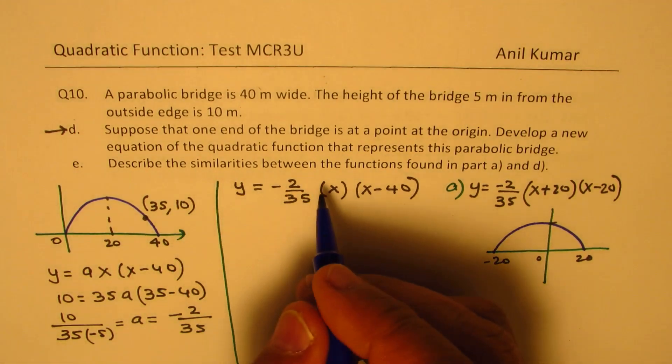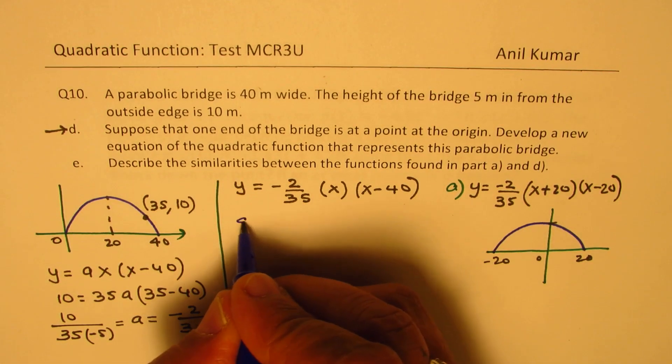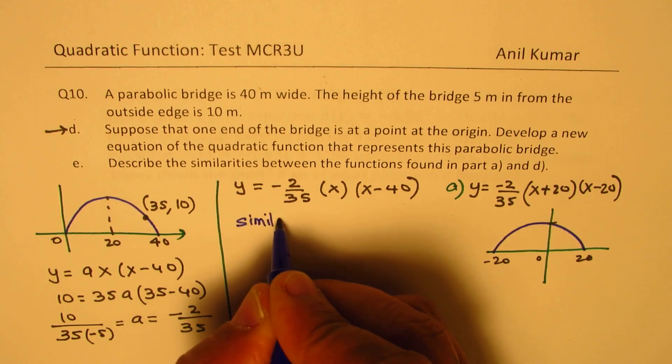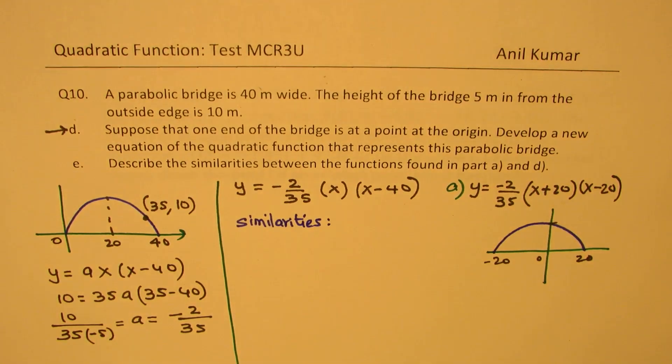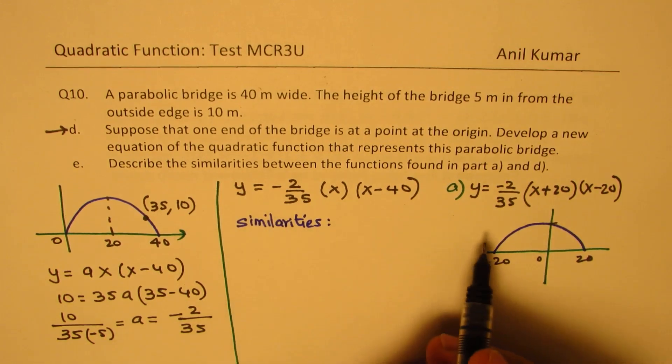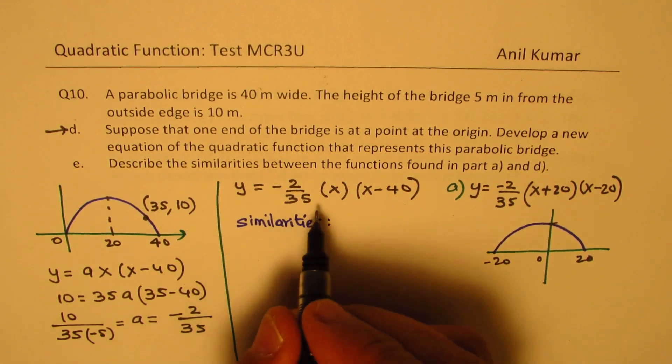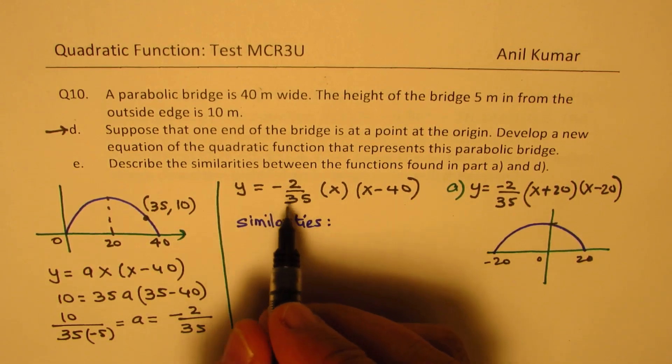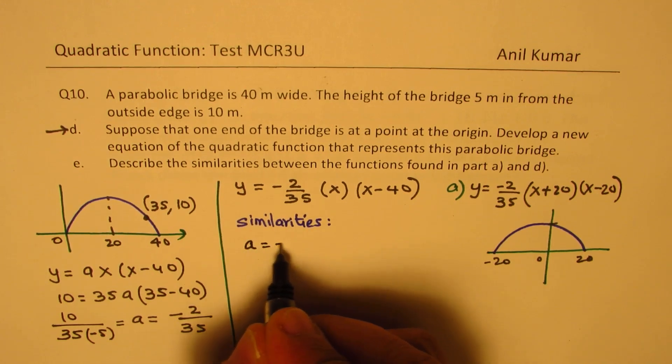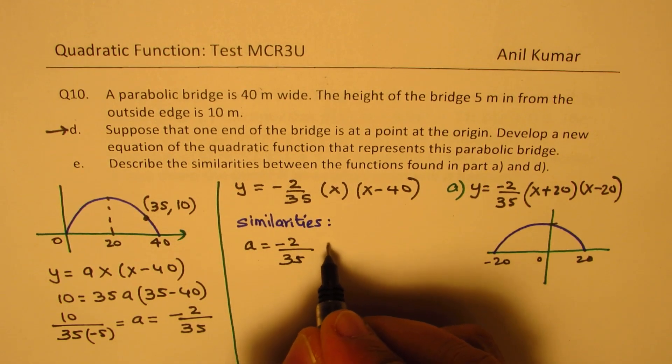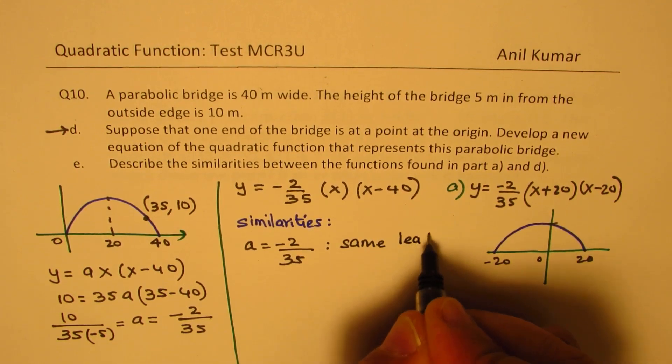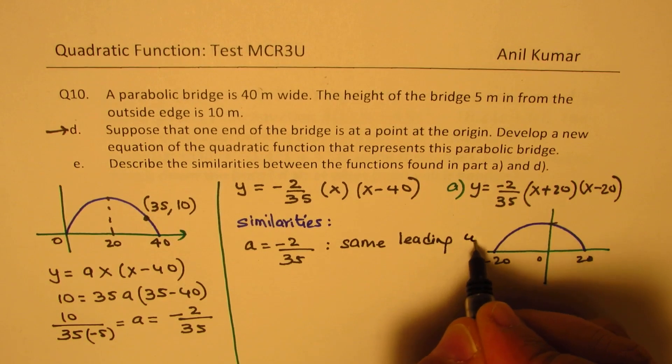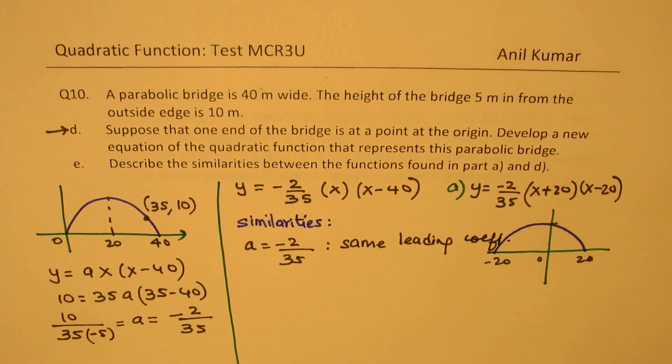So let's describe similarities between these. So similarities are, as you can see, that both have same leading coefficient, right? The A value equals to minus 2 over 35, that means same leading coefficient, correct?